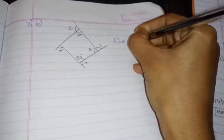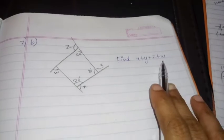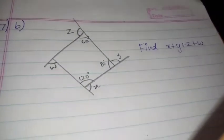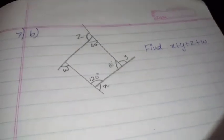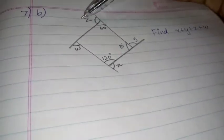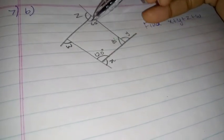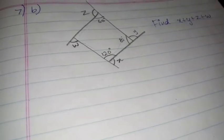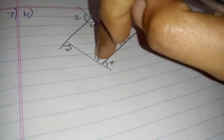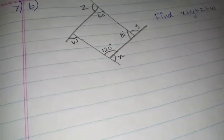Next is your 7th problem. We are going to find X plus Y plus Z plus W. The A question of problem 6 and D question are your homework — you should do it in your math homework note. Now we are going to find the values of Z, Y, W, and X. In the last problem we found values inside the figure; now inside values are given and we are going to find the angles outside.